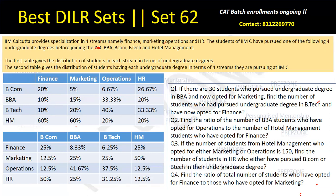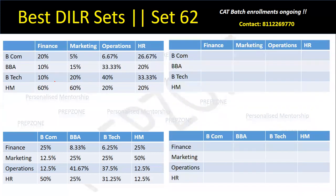The second table gives the distribution of students having each undergraduate degree in terms of the stream — which means people who joined IIM Calcutta from BCom: 25% of them joined Finance, 20%, 12.5%, 12.5% joined Marketing and Operations, and 50% joined HR. And then there are certain questions — if there are 30 students who pursued something, what is the number of students who pursued something else? Which means I have to find each of these variables in terms of each other.